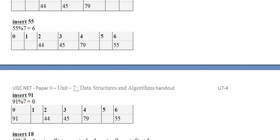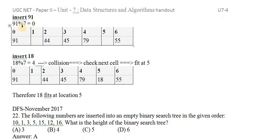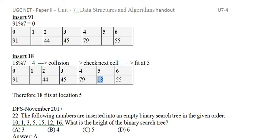Next is 55. 55 mod 7 is 6. Position 6 is empty, so placing it there. Then 91: 10 times 7 is 70, plus 3 times 7 is 21, total 91, remainder 0. Position 0 is empty, placing it there. Next data is 18 — that is our question. 18 mod 7 is 4. But position 4 is already filled with 79, so we move right. Position 5 is vacant — placing 18 there. So 5 is the answer.